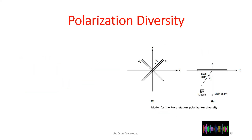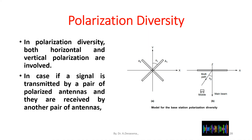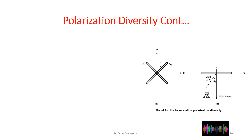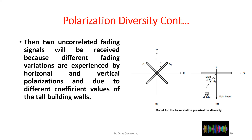The fifth type of diversity technique is polarization diversity. In polarization diversity, both horizontal and vertical polarizations are involved. If a signal is transmitted by a pair of polarized antennas and received by another pair of antennas, two uncorrelated fading signals will be received, because different fading variations are experienced by horizontal and vertical polarizations due to different coefficient values of tall building walls.